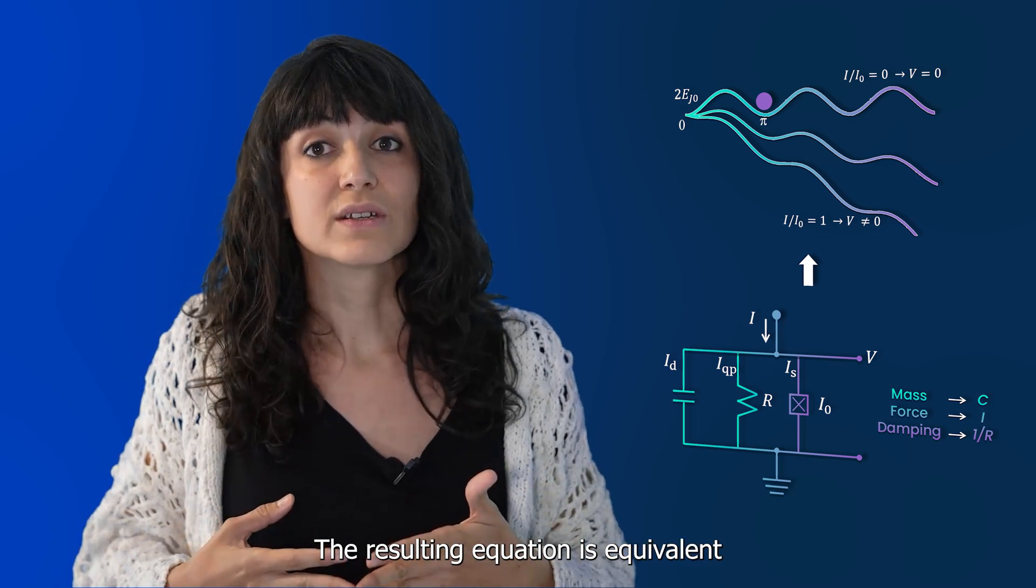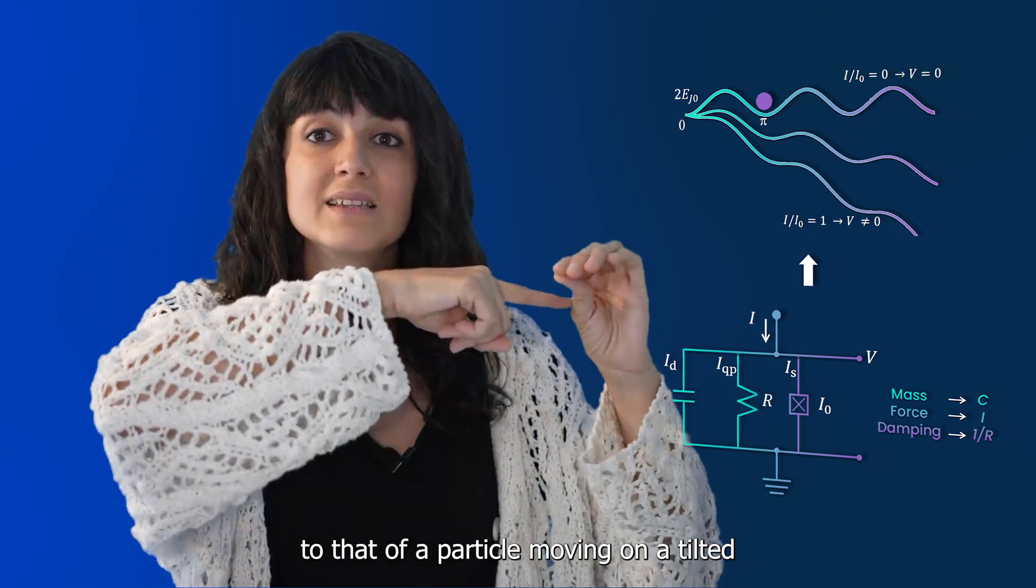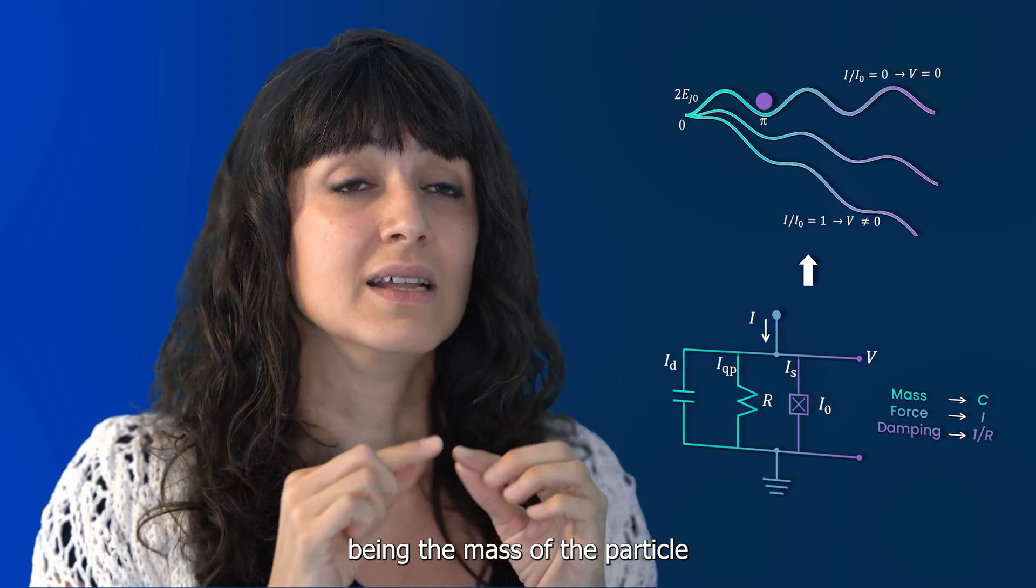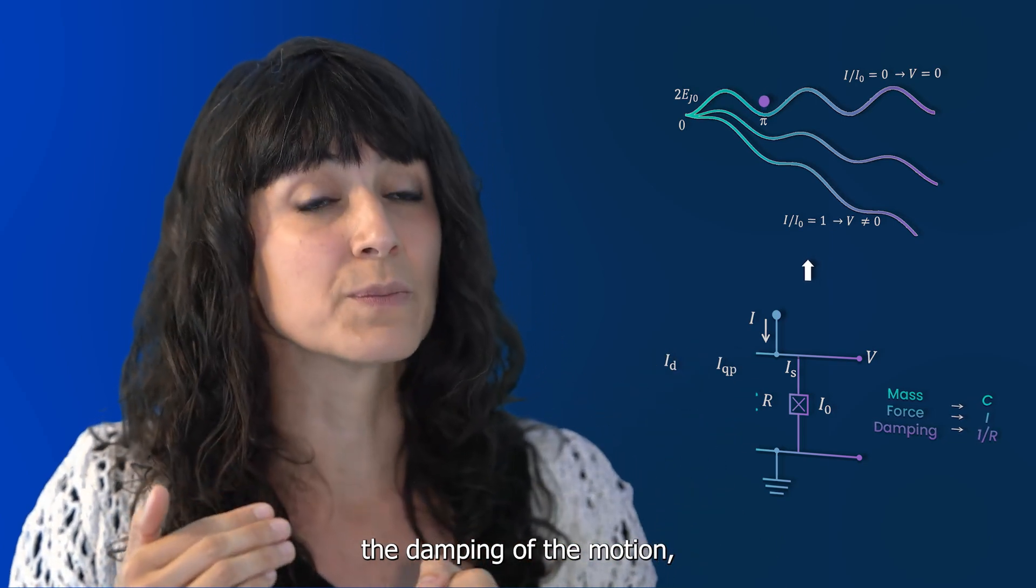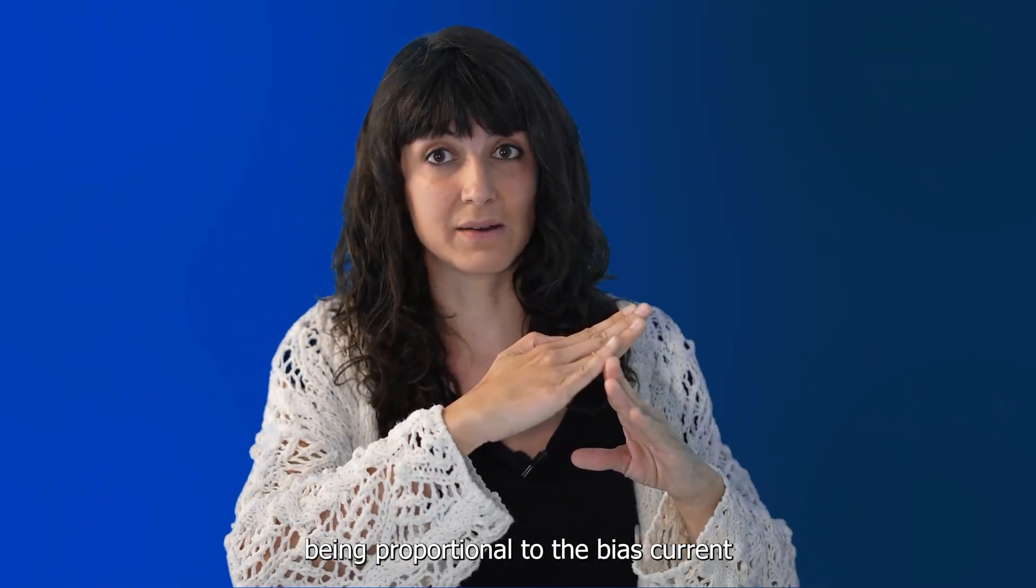The resulting equation is equivalent to that of a particle moving on a tilted washboard potential, with the capacitance being the mass of the particle, the inverse of the resistance representing the damping of the motion, and the average tilt of the washboard being proportional to the bias current.